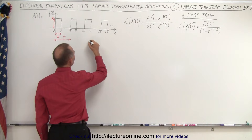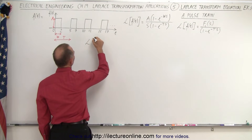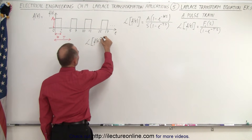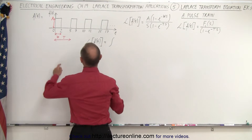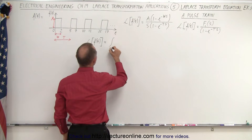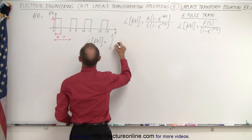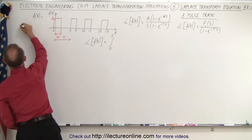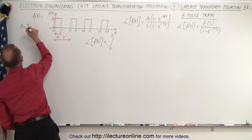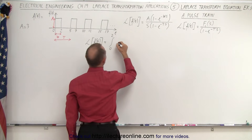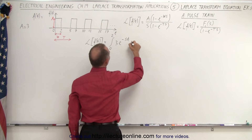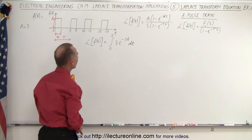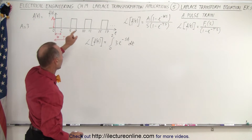The Laplace transform of the pulse train function is going to be equal to the first term: the integral from 0 to 2 of the function. Let's say the amplitude A is equal to 3. So we get 3 times e to the minus st dt as the Laplace transform of the first pulse.